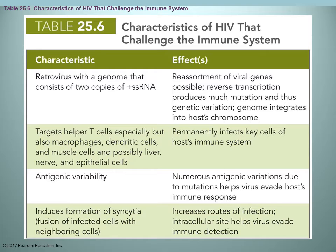HIV targets the helper T cells, which are the ones that activate the entire humoral immunity — all the B cells — and also activate cytotoxic T cells. Basically, it's wiping out the part of the immune system that initially gets notified that an invader is present and needs to notify everyone else.